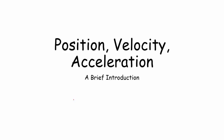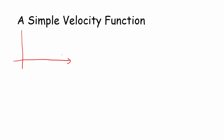Hello and welcome to a brief introduction on position, velocity, and acceleration functions. We are going to start with a very simple velocity function. Our function is going to be v of t equals 6. Let's measure our time in seconds and draw our graph out to maybe 4 seconds. Our units for velocity, let's say they are in meters per second.